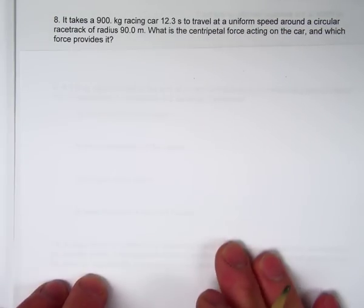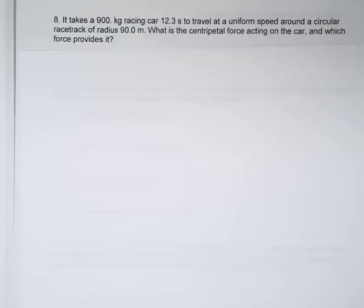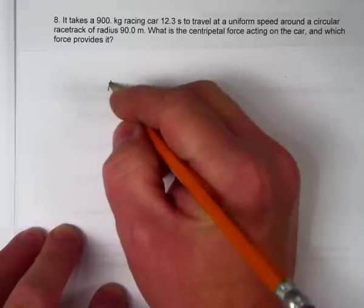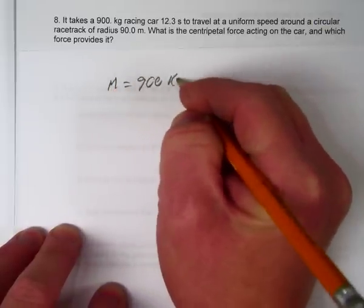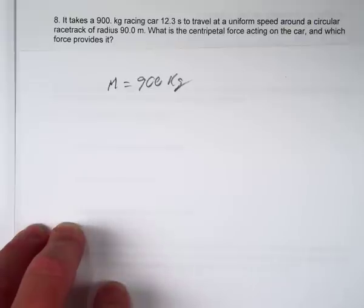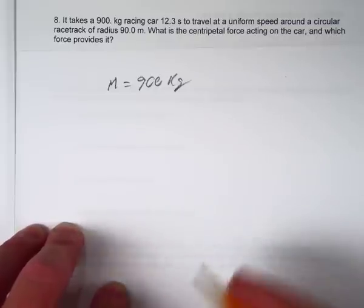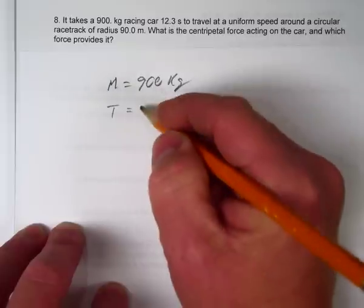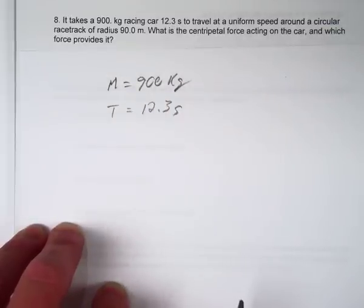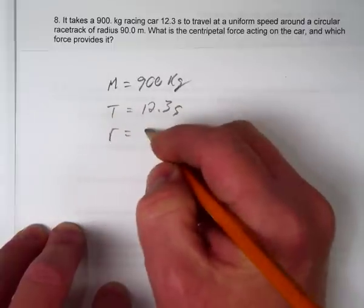Now number eight: it takes a 900-kilogram racing car 12.3 seconds to travel at uniform speed around a circular track of radius 90 meters. What's the centripetal force acting on the car and which force provides it? Mass = 900 kg, time to go around the track = 12.3 seconds - that's the period - and radius = 90 meters.